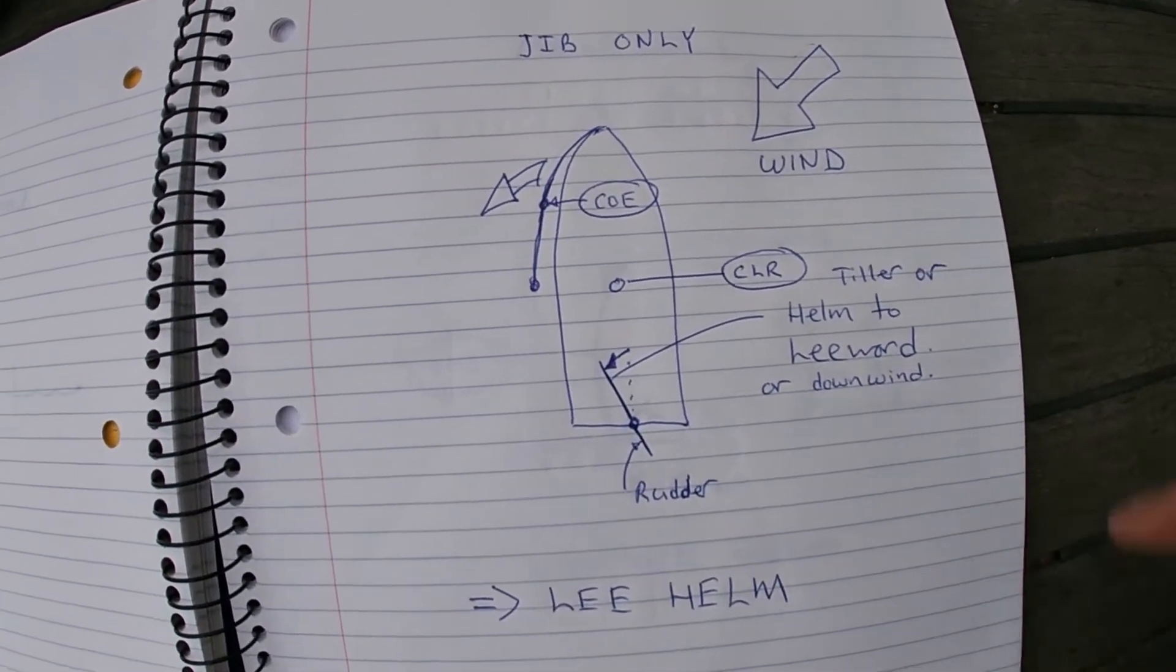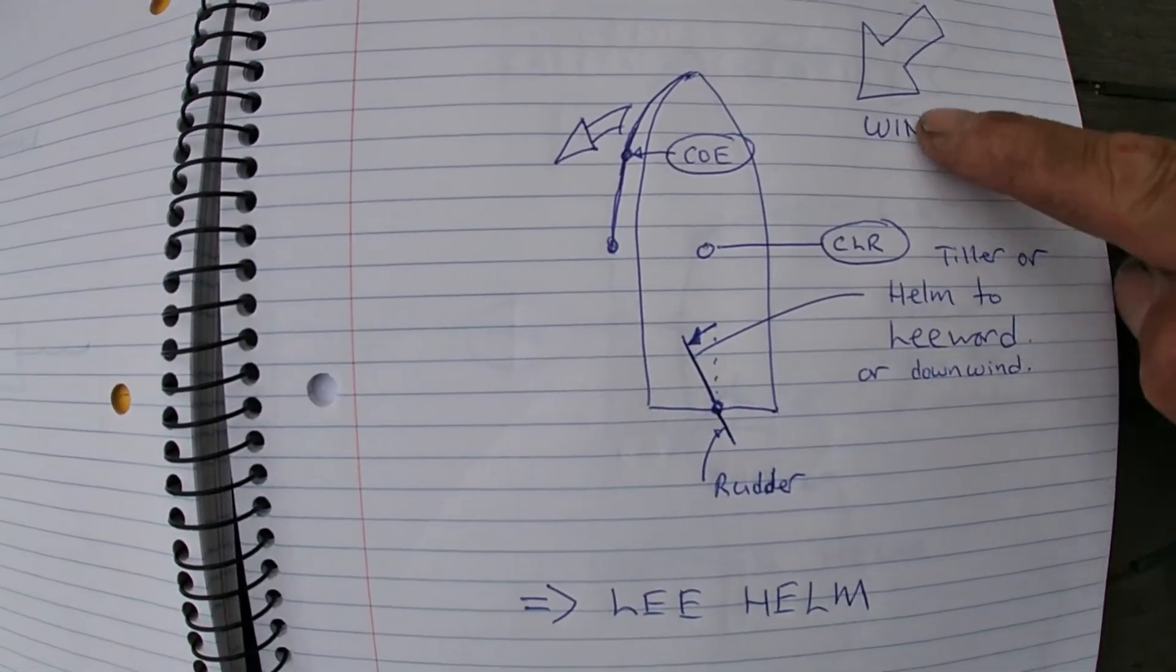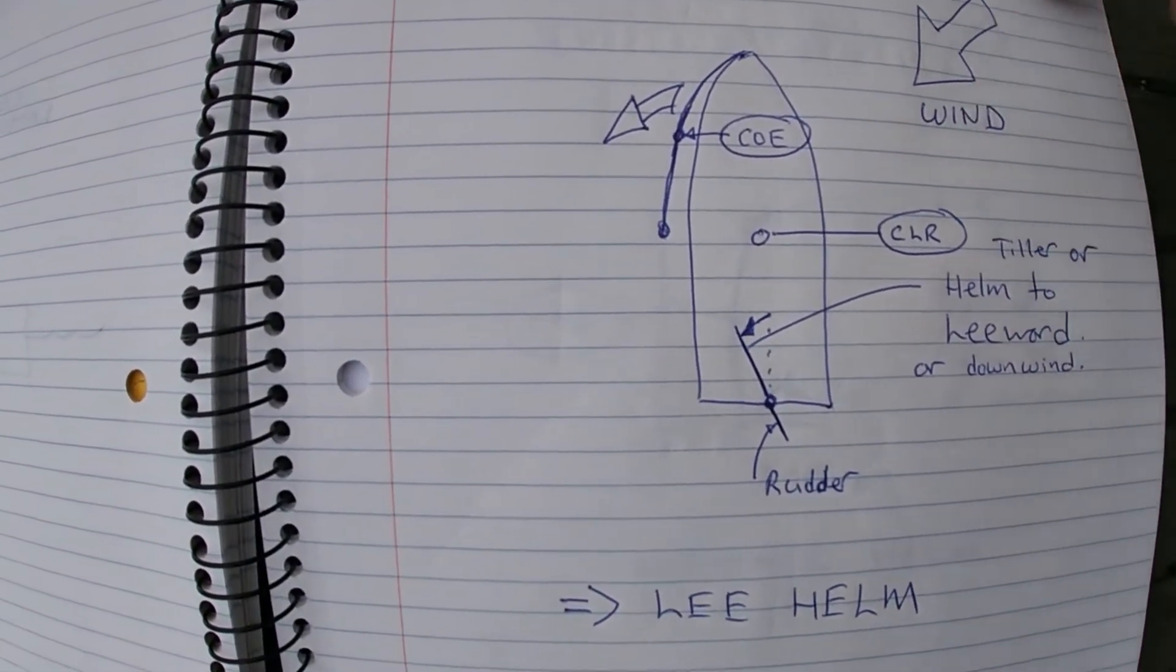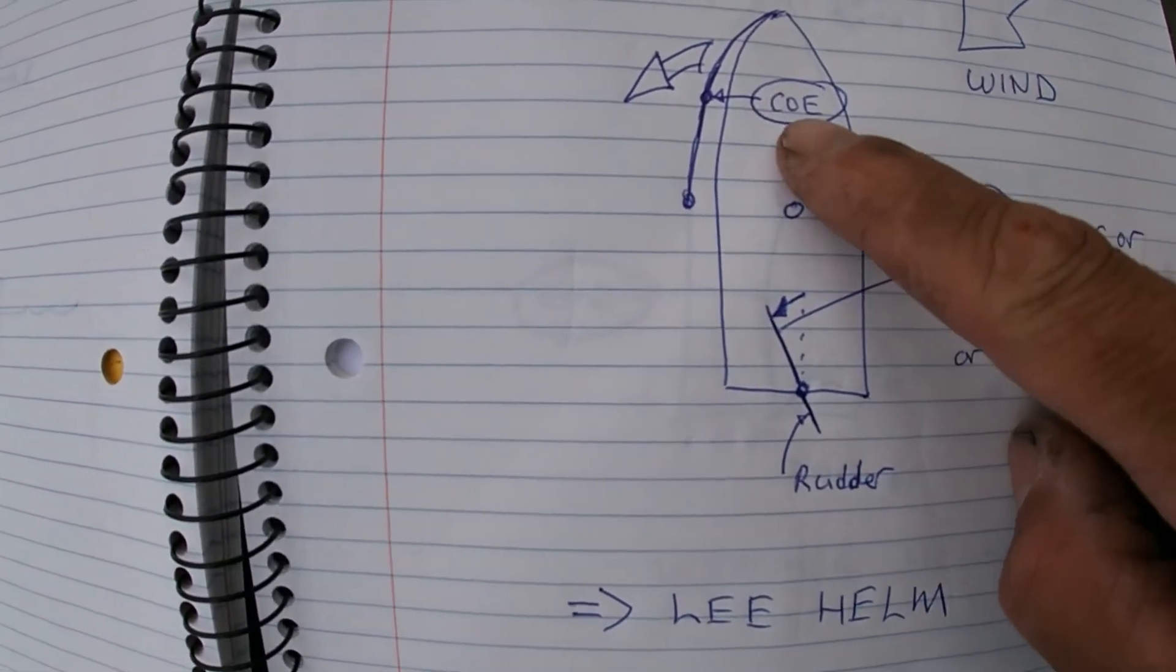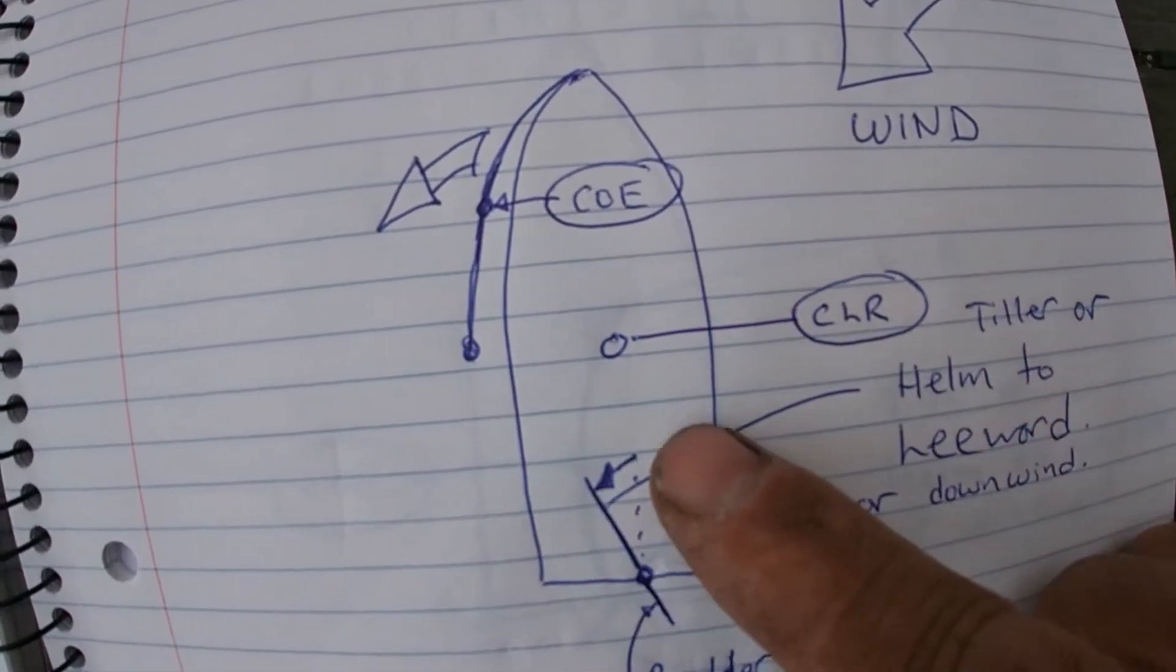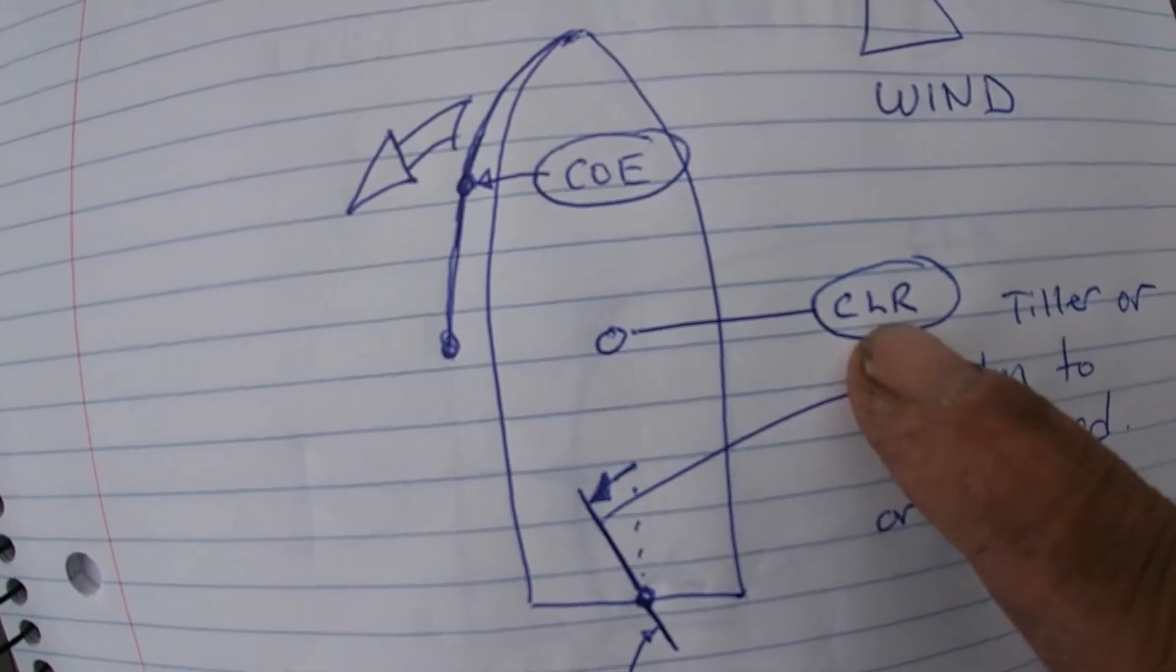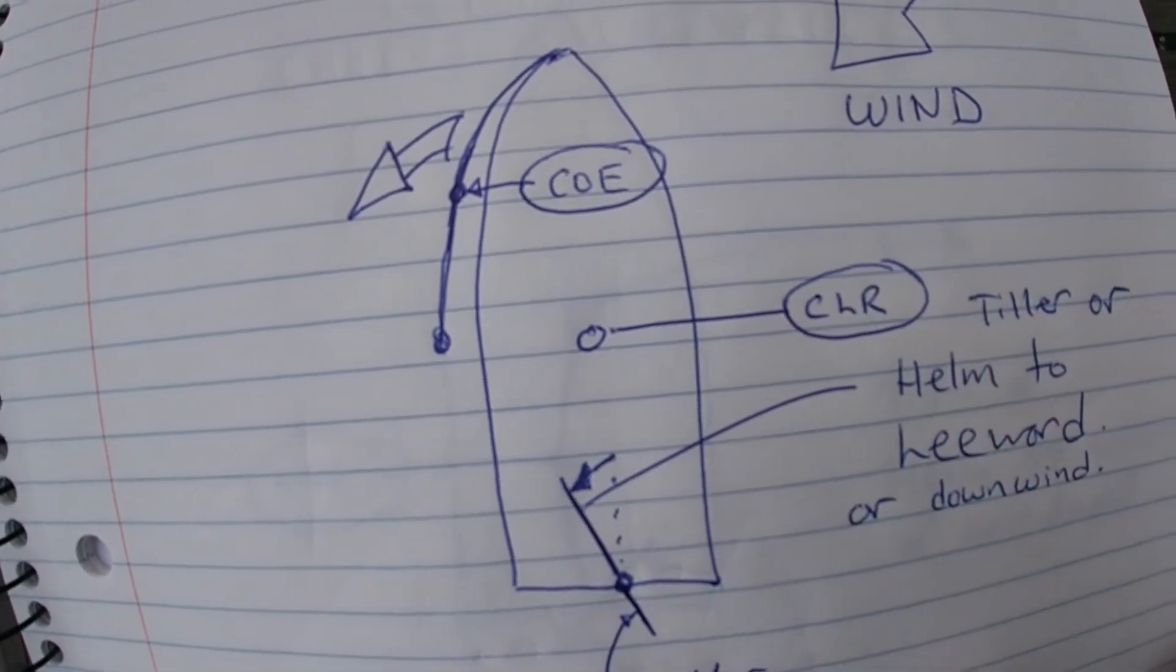Okay, so in this case, we're jib only, we're close hauled. This is the representative direction of the wind. We're showing the jib. I've got the center of effort roughly marked right here on the jib. I've got the center of lateral resistance marked there.